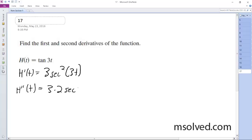So we're going to get secant of 3t times the tangent of 3t. Sorry, the derivative of the secant is secant tangent, so secant of 3t, tangent of 3t.